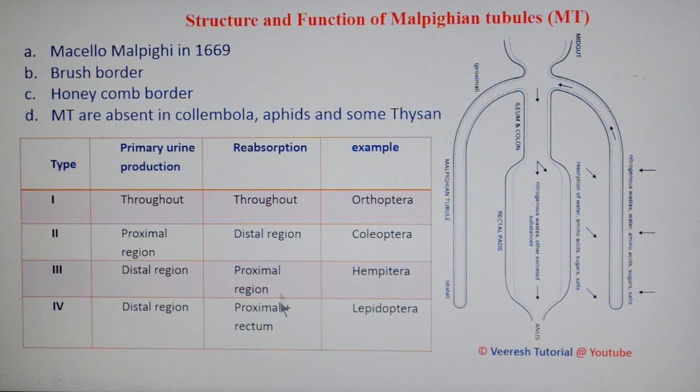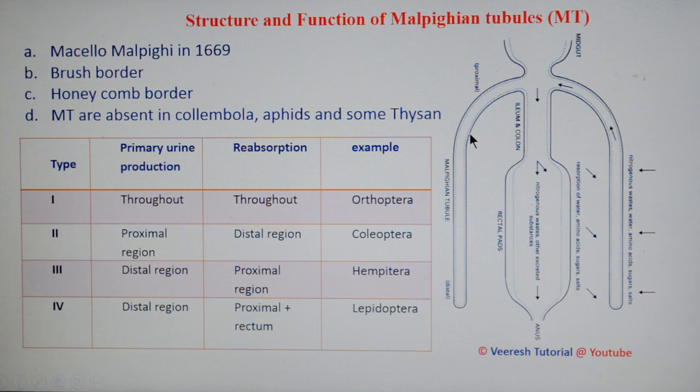The main function of Malpighian tubules is to regulate salt, water, and nitrogenous waste excretion. Apart from this, they are involved in primary urine production. In spittle bugs these tubules secrete spittle, while silk secretion takes place in larval Neuroptera. Light production occurs in Bolitophila larvae, and in some Chrysomelids they secrete sticky substances for protecting eggs.